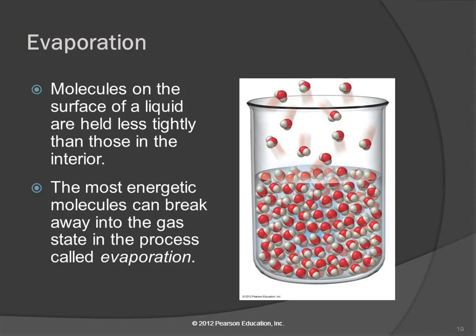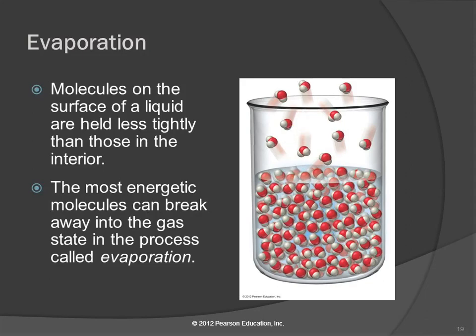Sometimes the Red Rover line is stronger and sometimes weaker. If you get kindergartners playing, it's easy to break through. So if you have weak intermolecular forces and a molecule moving upward, it doesn't need to be going very fast to escape. But if you had the O-line of a football team playing Red Rover, you'd have to be moving really fast to break through. If the intermolecular forces are strong, it's going to be very hard to get through.